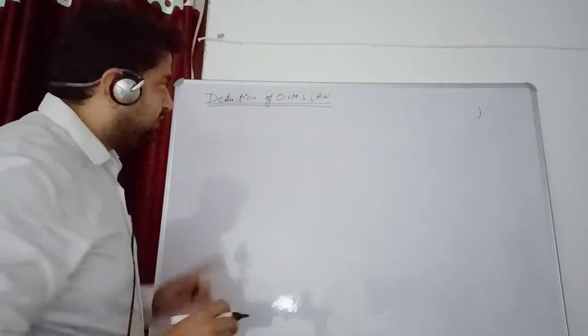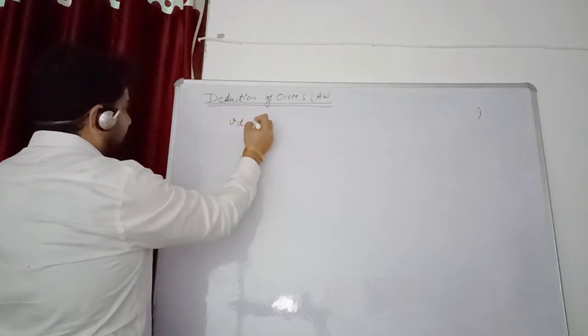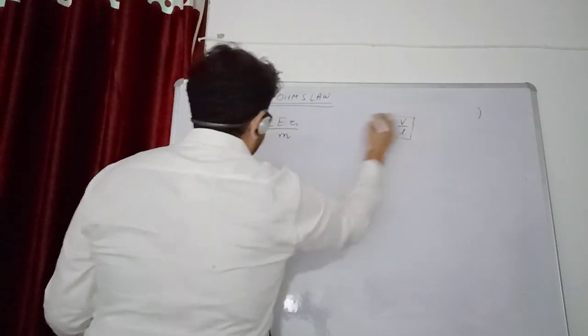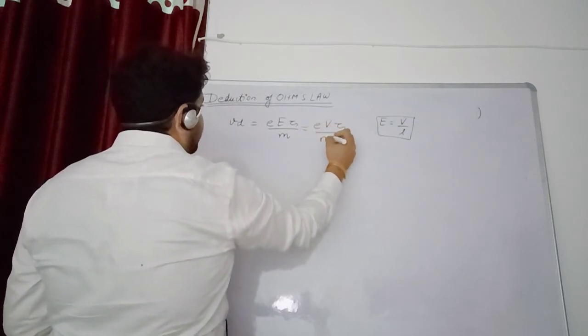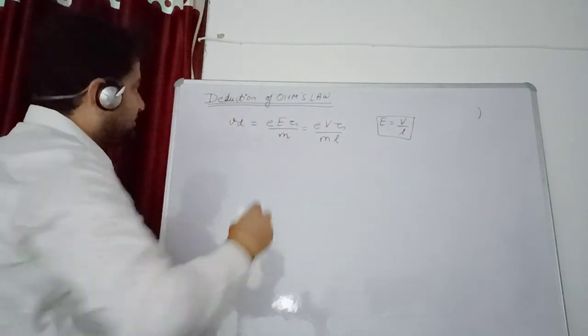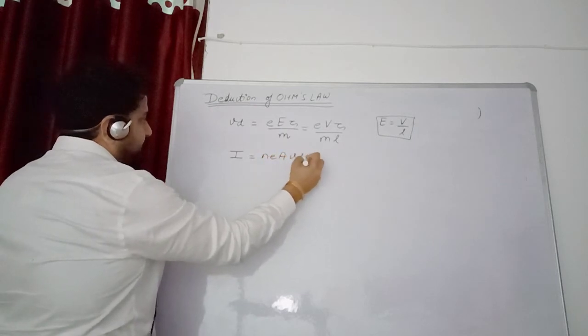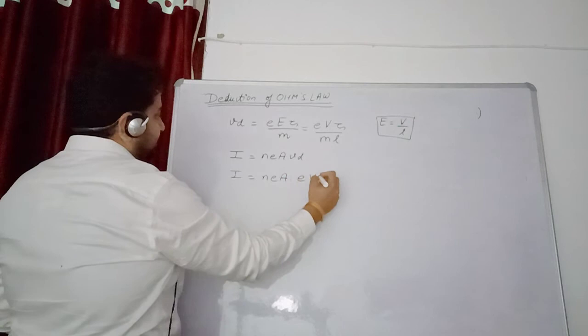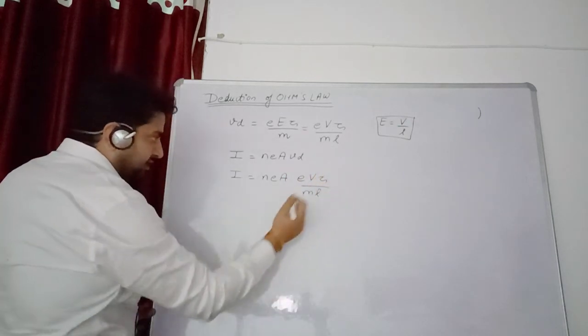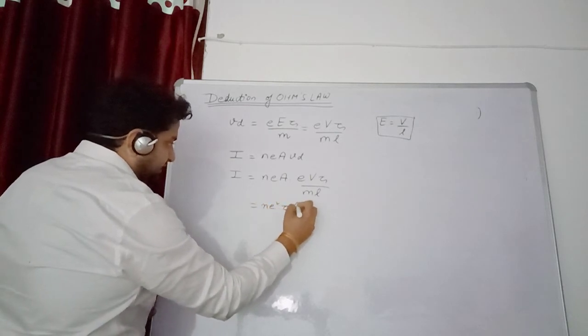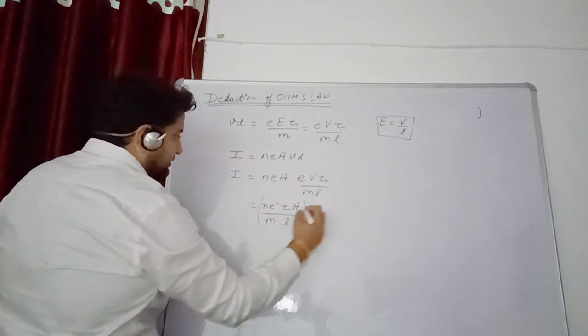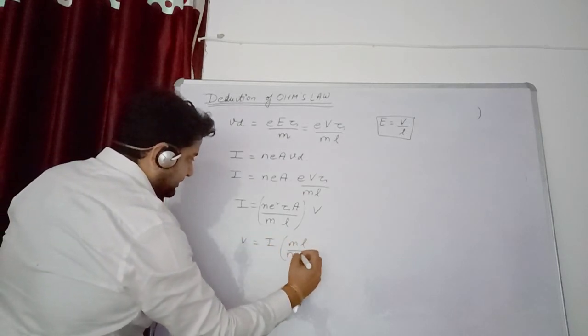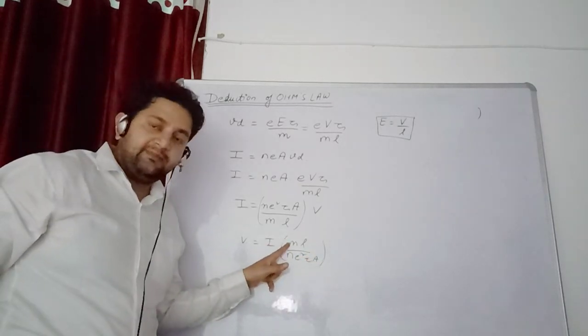Now we will derive a relation for Ohm's law from this equation. We know that drift velocity magnitude is E E tau upon M, and electric field equals V upon L. So we can put E V tau upon M L. Previously we have seen that I equals N E A vd. So we can put the value of vd, getting I equals N E A times E V tau upon M L. Separating terms: V equals I into M L upon N E square tau A.